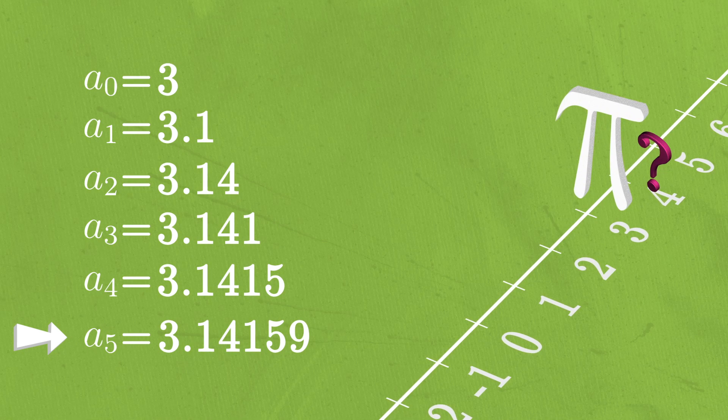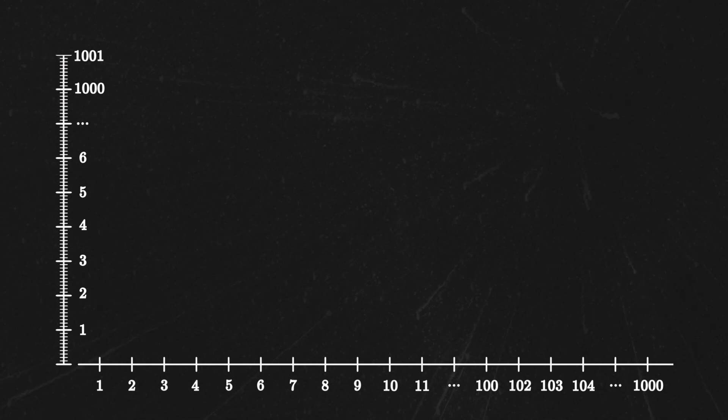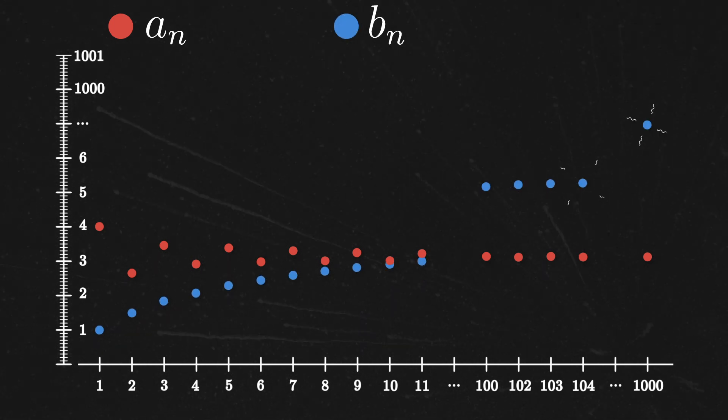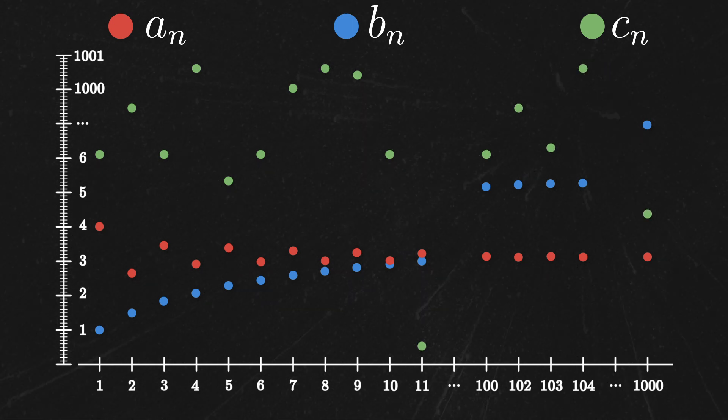To gather more intuition, let's plot some sequences as dots in the plane whose x-coordinate is its position in the sequence and whose y-coordinate is its value. The red dots represent our sequence converging to pi, while the blue dots tend off towards infinity, and the green dots represent the sequence that just jumps around chaotically.